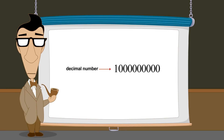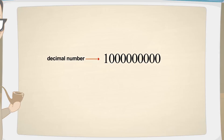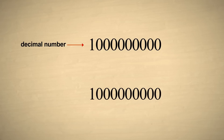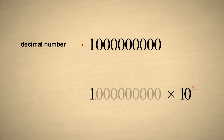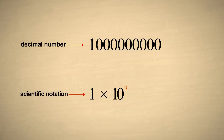Let's try writing the number one billion in scientific notation. Once again, we'll add a multiplier of ten to the zero power. Now to position the decimal point after the first non-zero digit, we will need to move it nine columns to the left. Therefore, we must increase the exponent of the multiplier by nine. The number is now written in scientific notation.